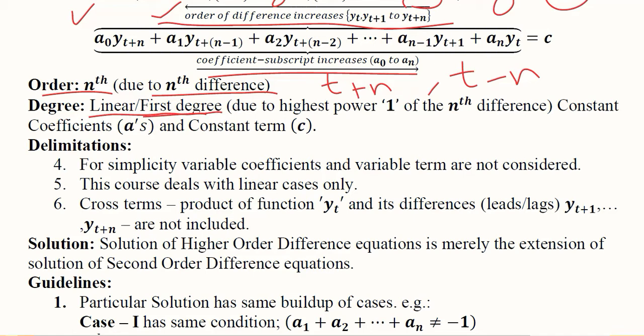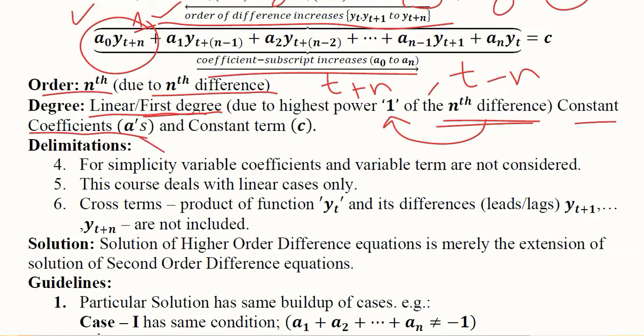It is first degree or linear in nature because the power of the nth order difference term is 1. The highest order lag or lead has a power of 1 — it doesn't have any square, cube, or higher power. The constant coefficients involved are represented by a's: a1, a2, a3, and so on up to an.